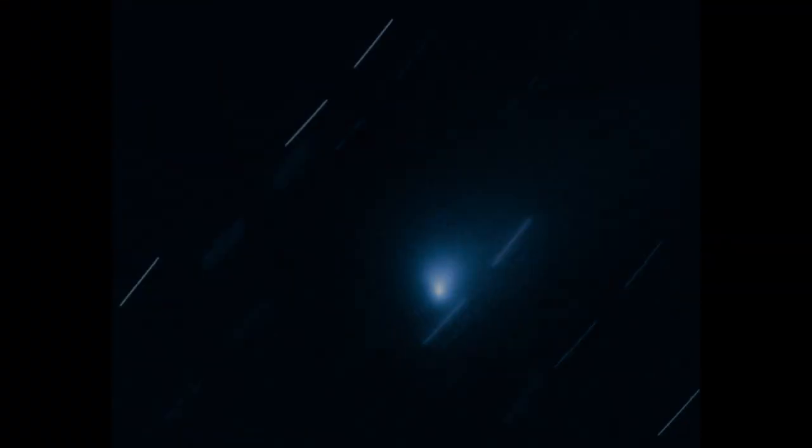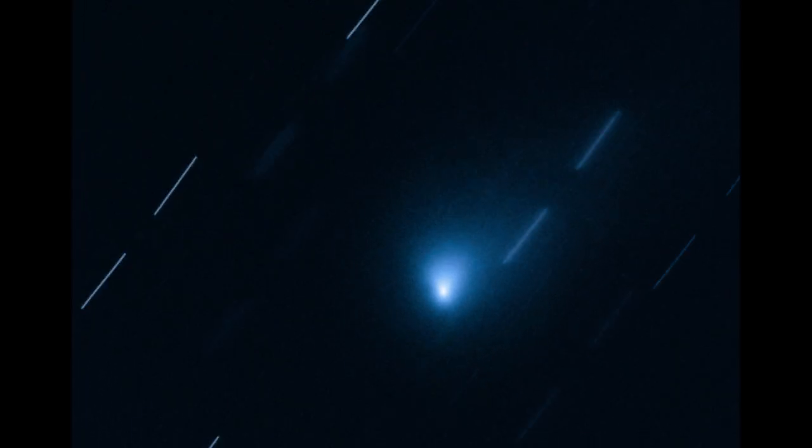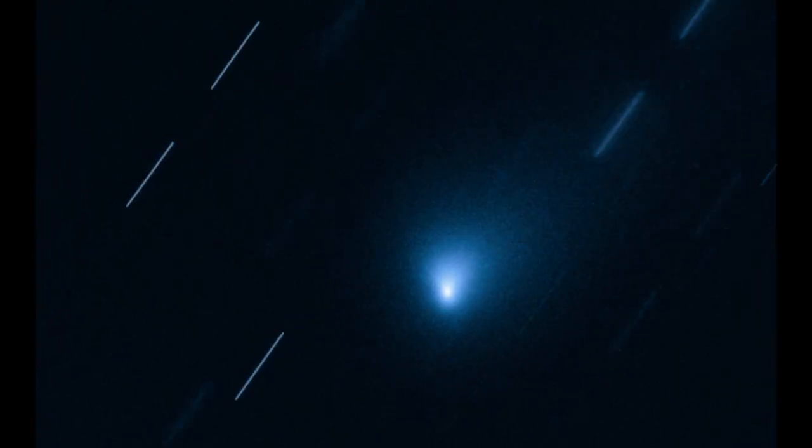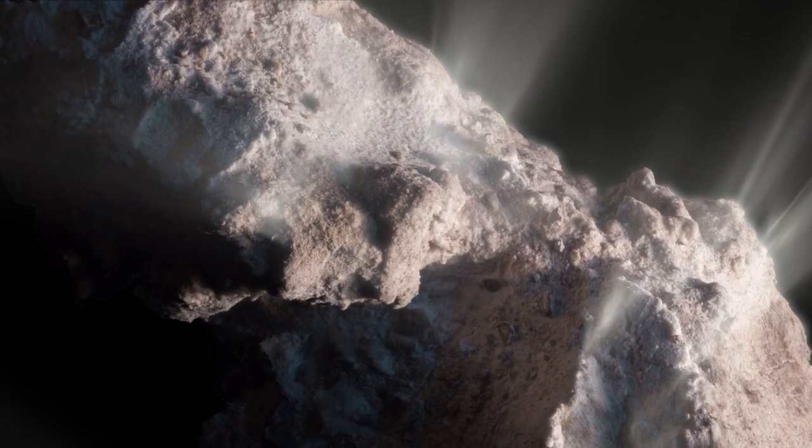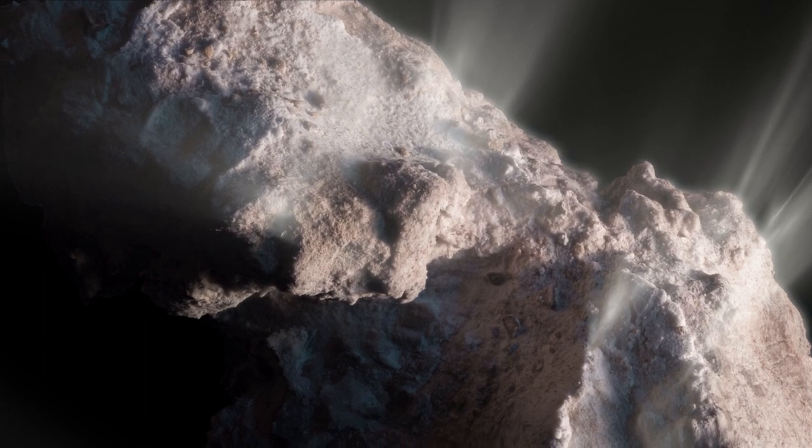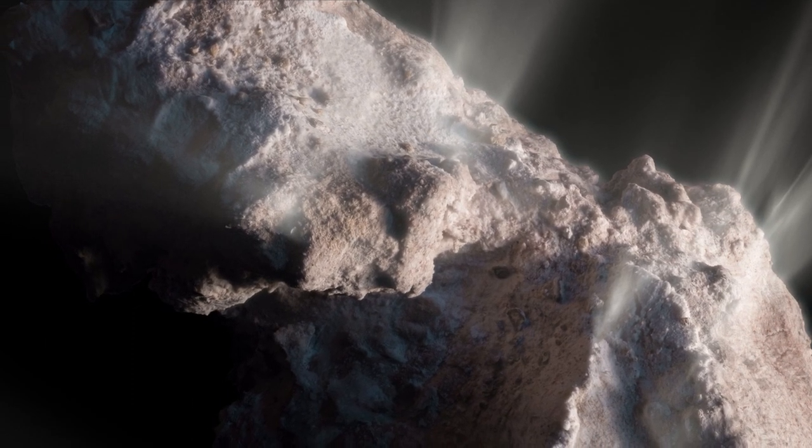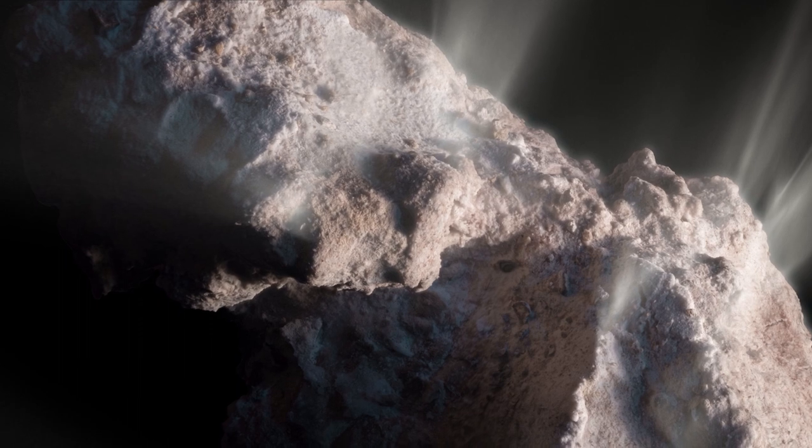In 2019, Hubble provided astronomers with their sharpest and best observation to date of the interstellar visitor comet 2I Borisov, which is believed to have arrived here from another planetary system elsewhere in our galaxy.